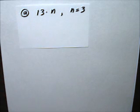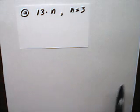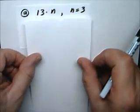This example has parts A, B, C, and D. This first example is 13 times N, and you have to evaluate it when N equals 3.